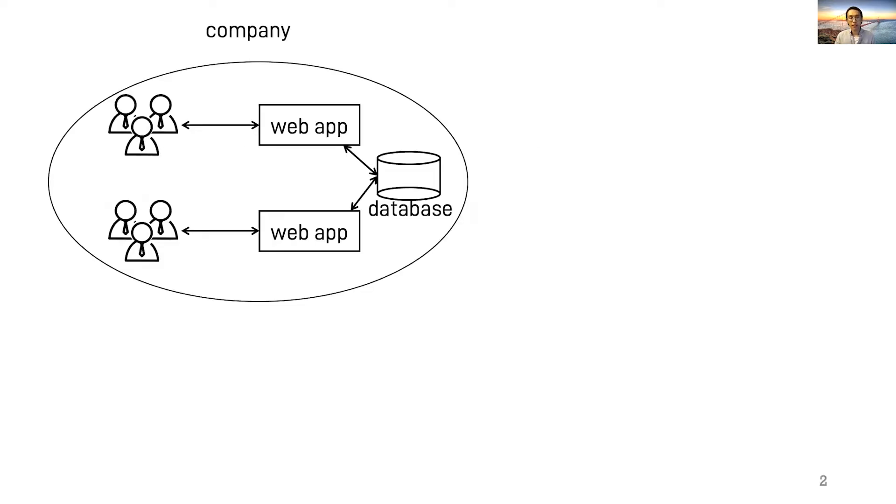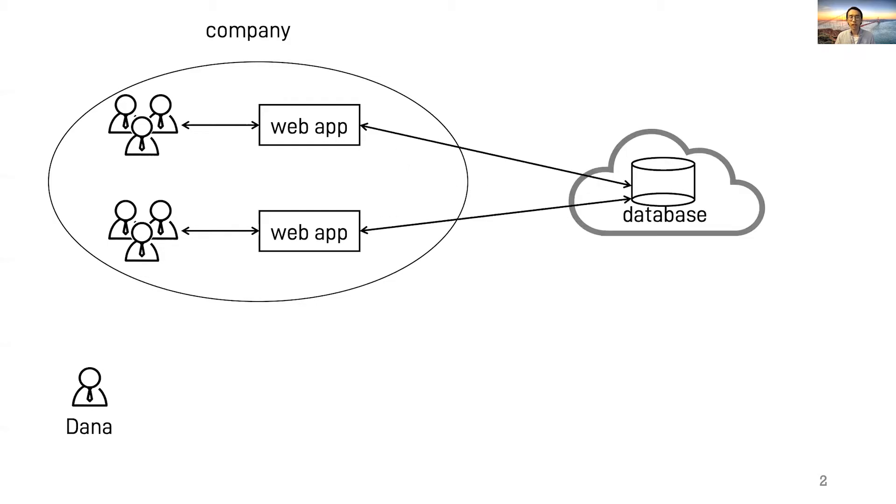Let's start with the motivating example. Imagine a company which has geo-distributed offices and uses a web application. Dana works at this company and has been given the responsibility of deploying this application. For performance and fault tolerance, Dana wants to use a cloud database at the backend.